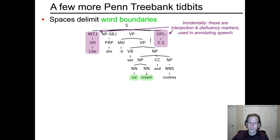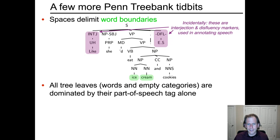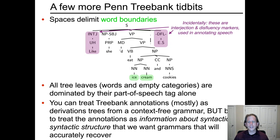Incidentally, this spoken example also includes interjection and disfluency markers — spoken annotations used only for speech, so there's some special speech-specific syntax to handle. Also, all tree leaves, both word and empty categories, are dominated by their part of speech alone, so the last rewrite getting to any leaf is a unary rewrite. If written as a context-free rule, it would have only one symbol on the right-hand side.